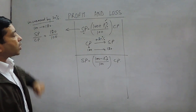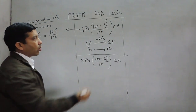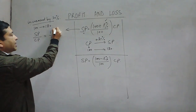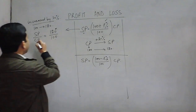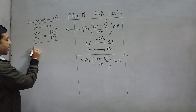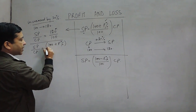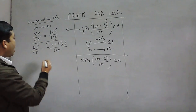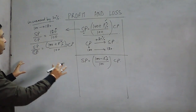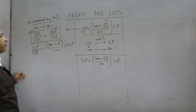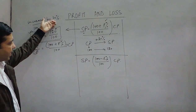From where does 120 come? It is nothing but 100 plus profit percent. Since the profit percent is 20, it is 100 + 20 = 120. So SP / CP = (100 + P%) / 100. This 100 is the denominator and the cost price forms the ratio. If we cross-multiply, it gives us the formula in our books: SP = (100 + P%) / 100 × CP.